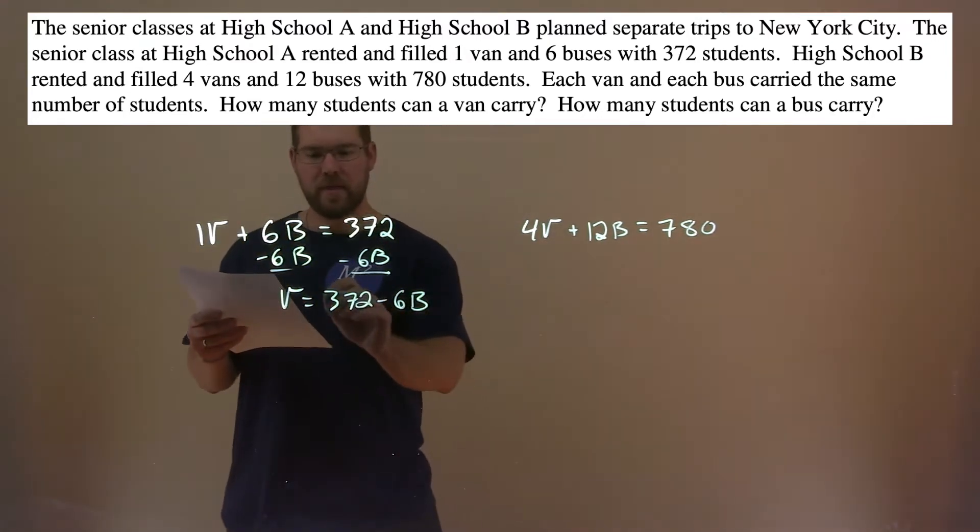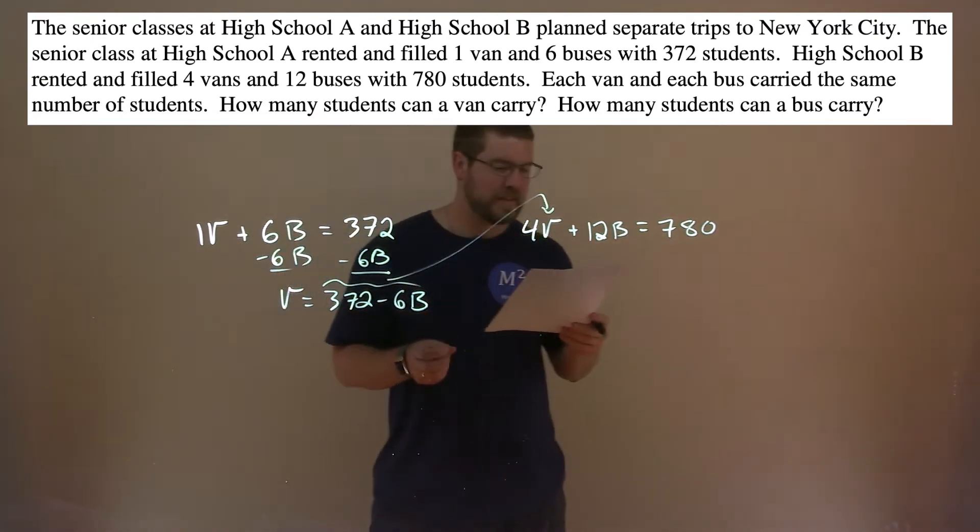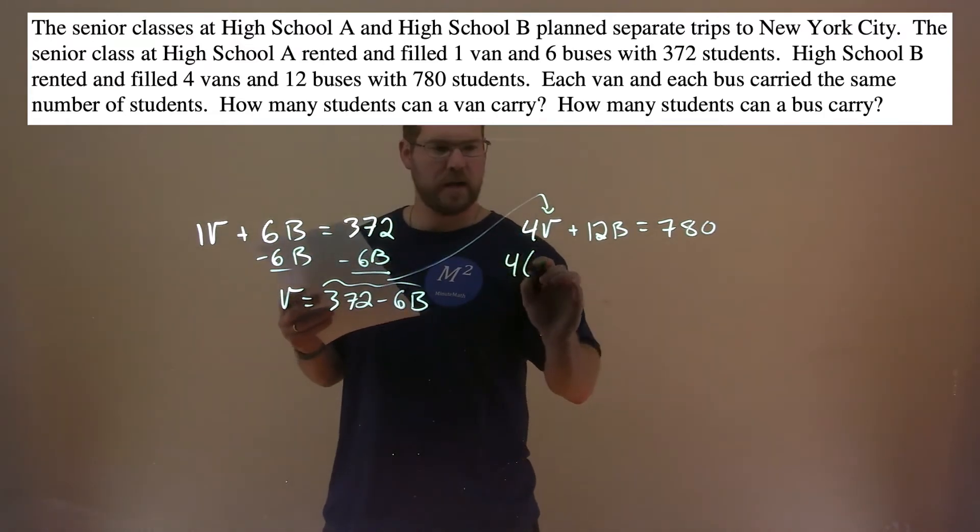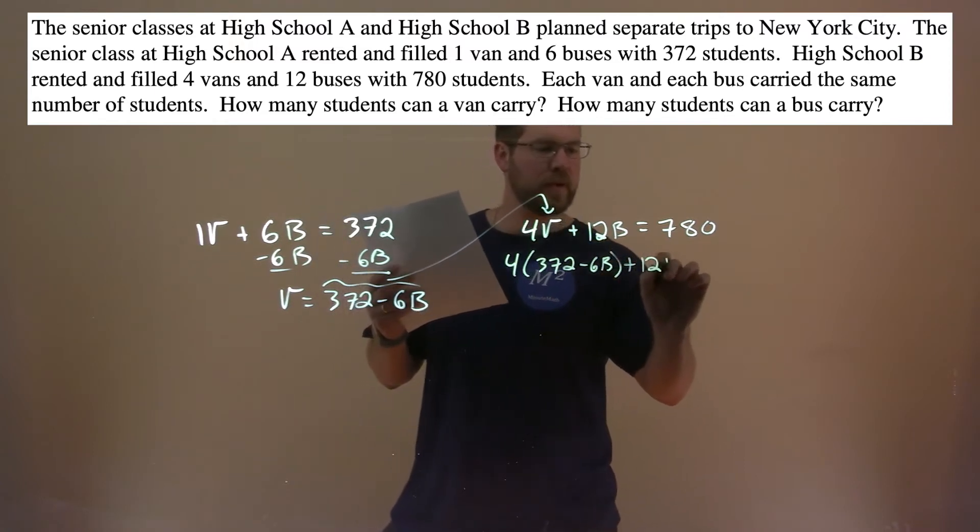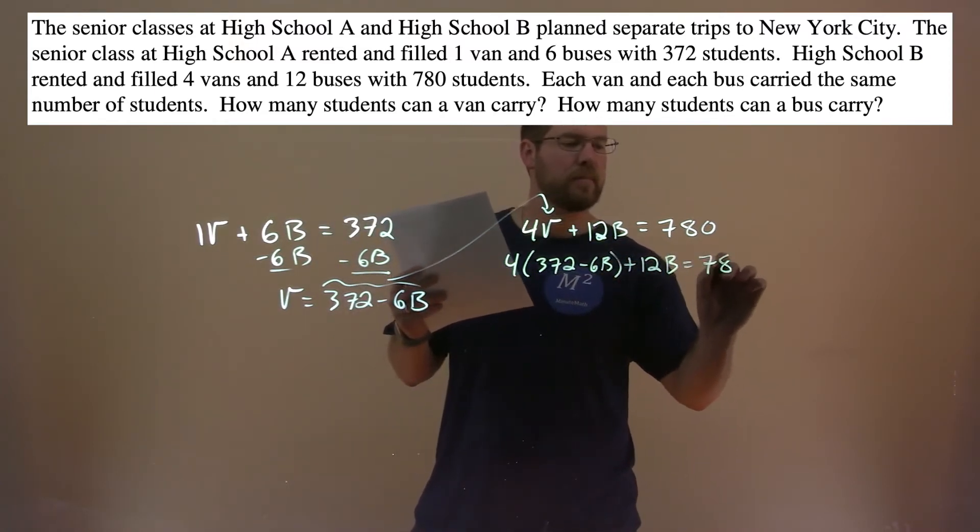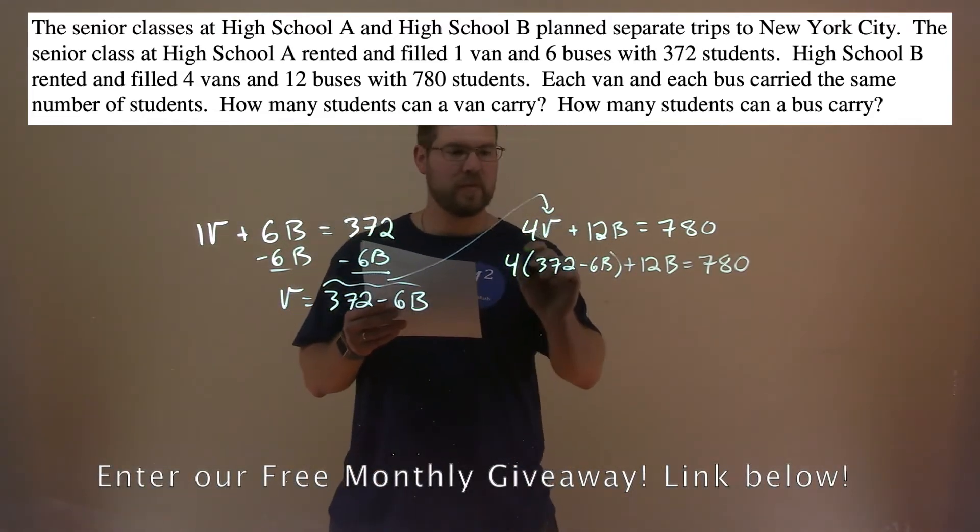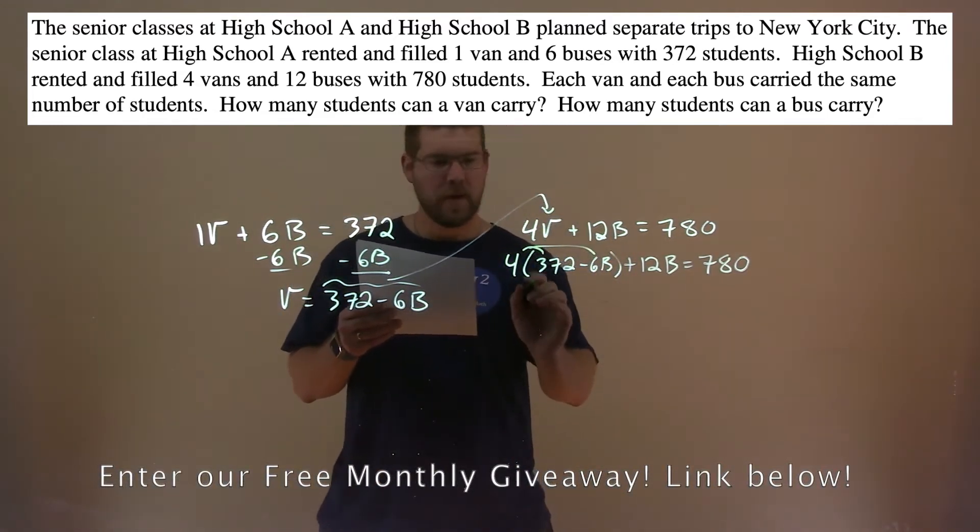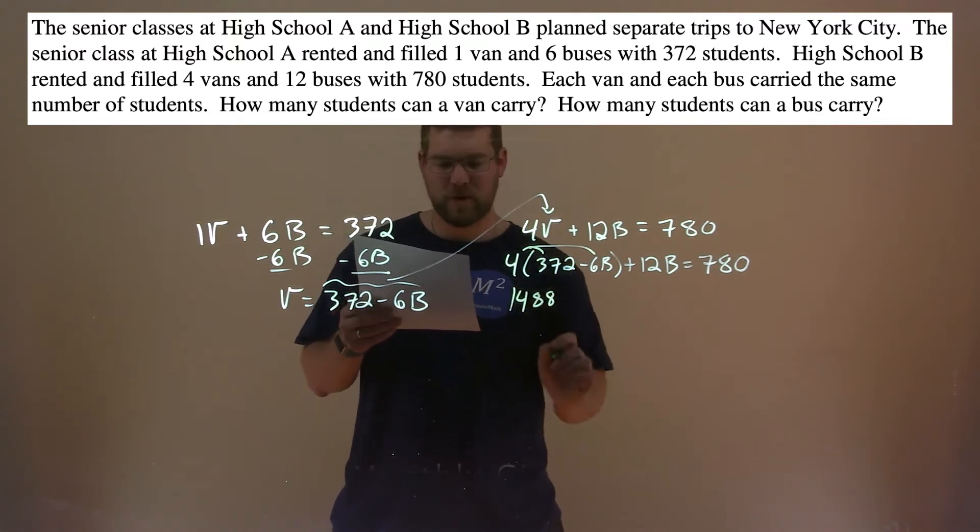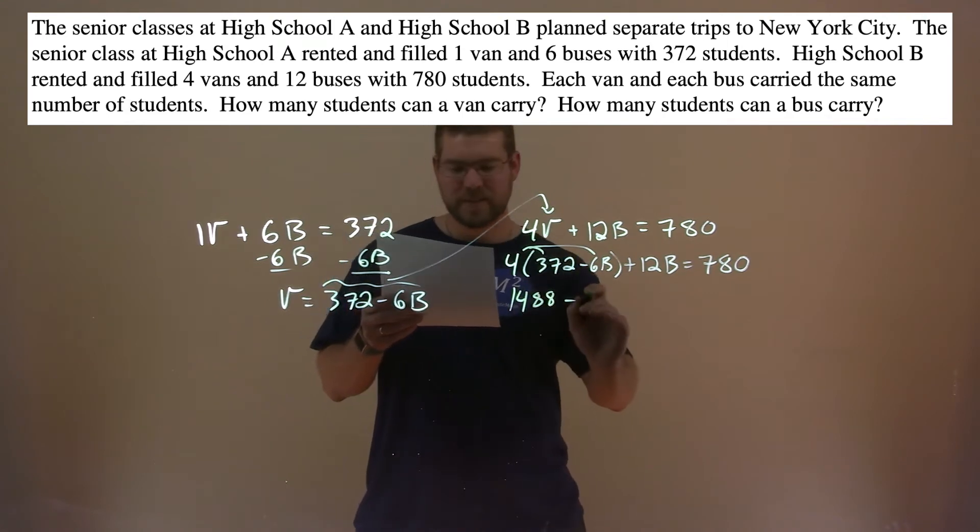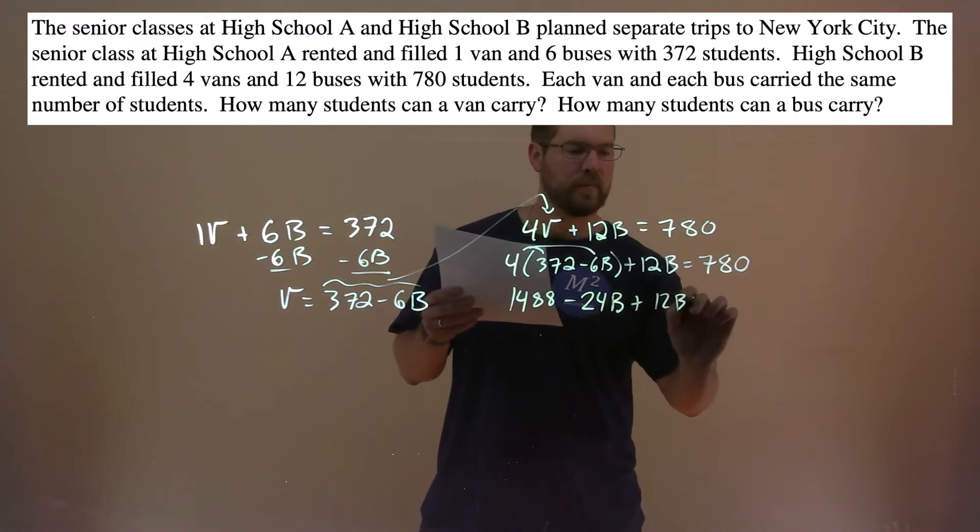With that information, I'm going to plug this in for V in the second equation. Okay, 4 times (372 minus 6B) plus 12B equals 780. Now we want to solve for B. Distribute the 4 to both parts. 4 times 372 is 1488.